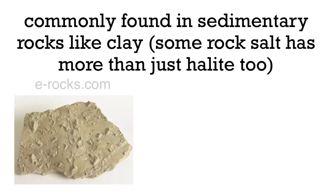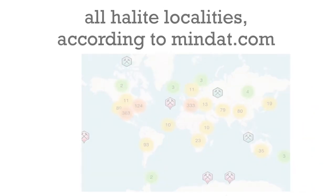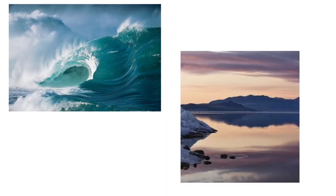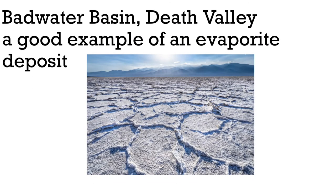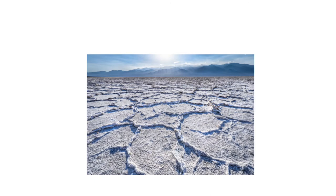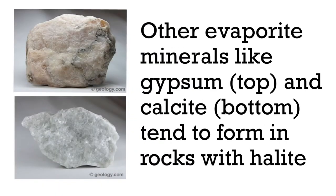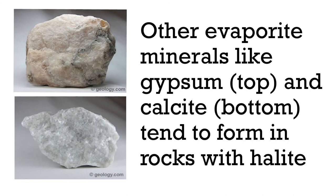Halite is very common, found in masses of clay and other sedimentary rocks. There are countless salt mines all over the world. It's also found dissolved in the ocean and some lakes. During dry seasons, some or all of the water in salt lakes can evaporate and leave the halite behind. This is why it's called an evaporite mineral, which also causes it to form sedimentary rocks with other evaporite minerals like gypsum.